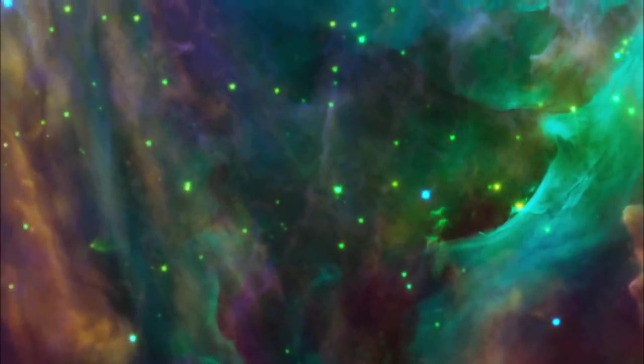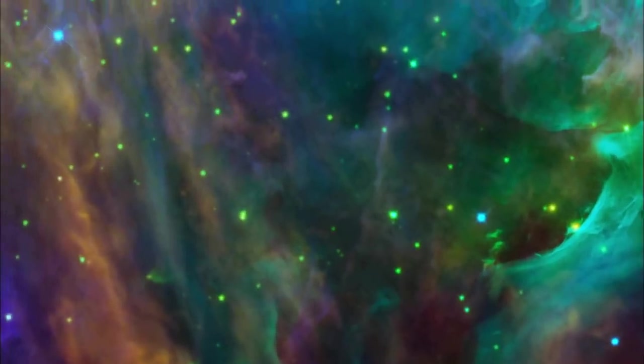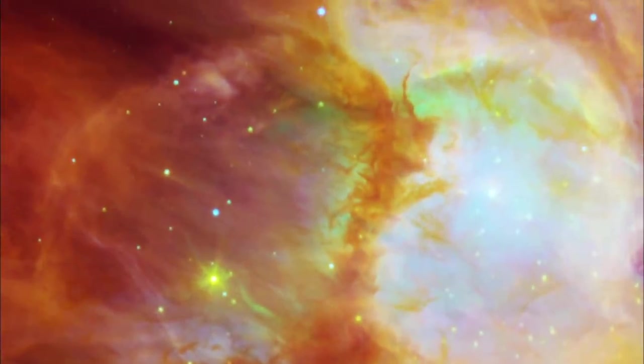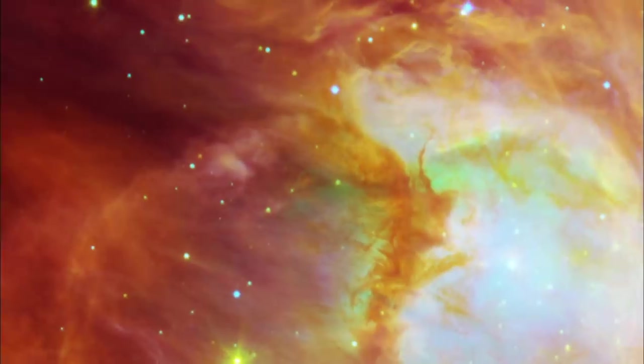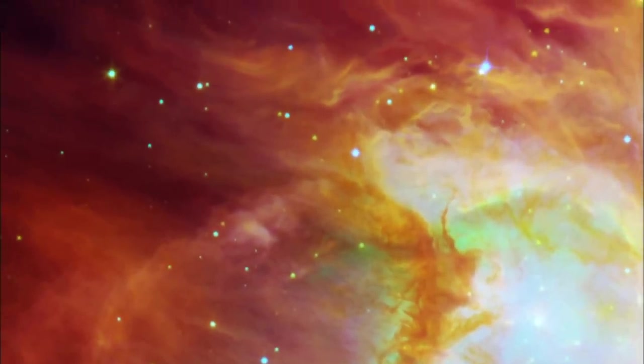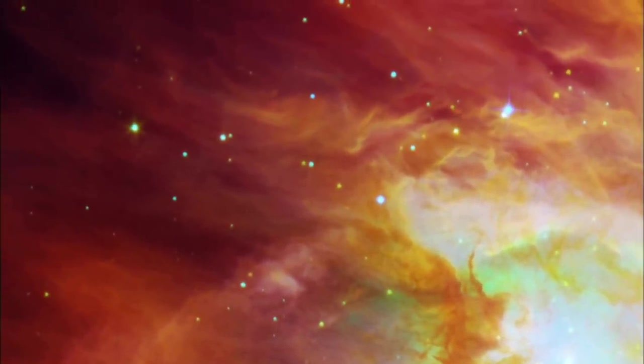Wisps of green light are partly due to atoms of sulfur, while some of the red light around the outskirts of the nebula is produced by chemical compounds that are rich in carbon.